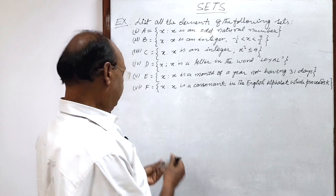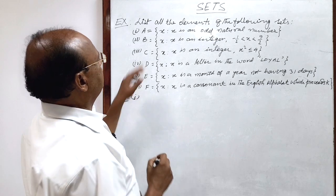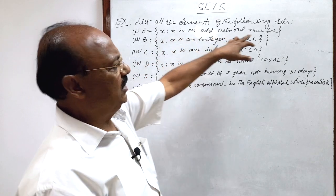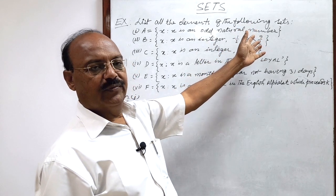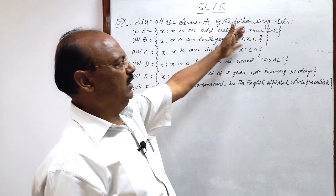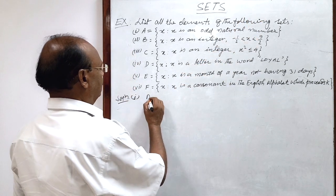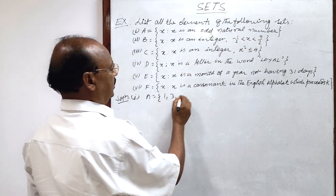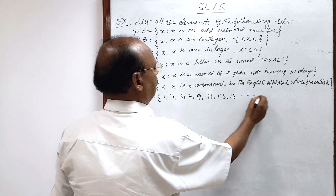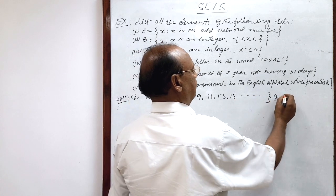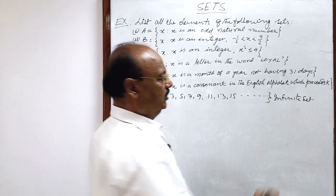So let us see these questions one by one. Here question number one is x such that x is an odd natural number. So obviously this set will be an infinite set. Because there is no limitation, we have to write all the odd natural numbers. So therefore, you know odd natural numbers are 1, 3, 5, 7, 9, 11, 13, 15 and so on. So this is an infinite set. So this is the answer.